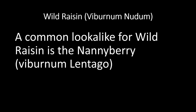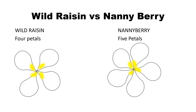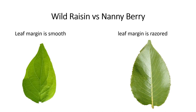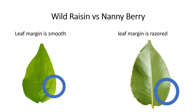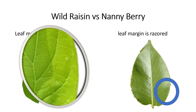Wild raisins do have common look-alikes, and one of them is the nanny berry. The biggest difference between the wild raisin and the nanny berry is the flowers: wild raisins will have four petals, while the nanny berry will have five petals. This is one of the biggest differences, though it can only be determined in the spring months. Another difference is the leaf margin — the leaf margin is smooth on a wild raisin, whereas the nanny berry's leaf margin is slightly serrated or razored.